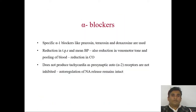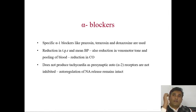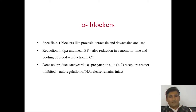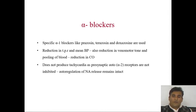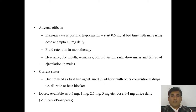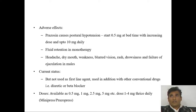Alpha blockers — particularly alpha-1 blockers like prazosin, terazosin, and doxazosin — block alpha receptors on the periphery, which are most abundantly present on cutaneous blood vessels. This causes blood vessel dilation and decreases blood pressure. Major adverse effects include postural hypotension (first-dose effect), fluid retention, headache, dry mouth, weakness, and blurred vision. Alpha blockers are not a first choice of drug and should be used in combination with diuretics or beta blockers.